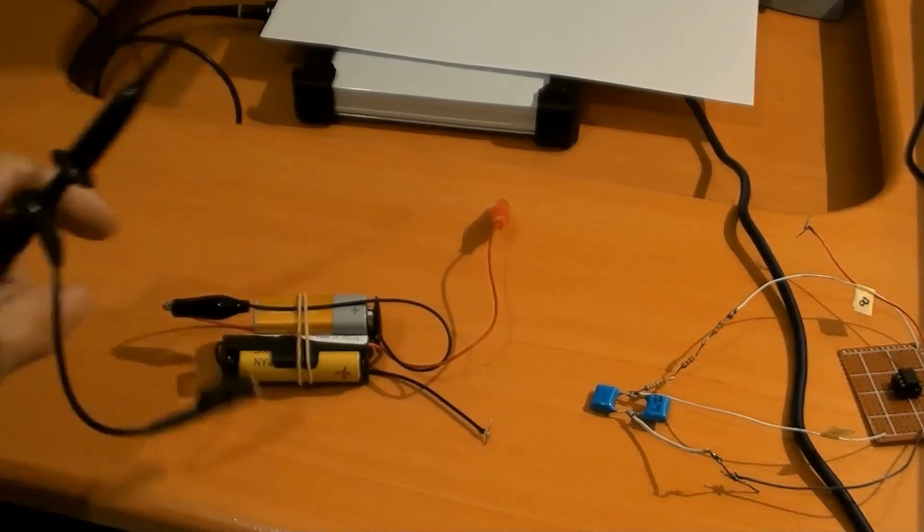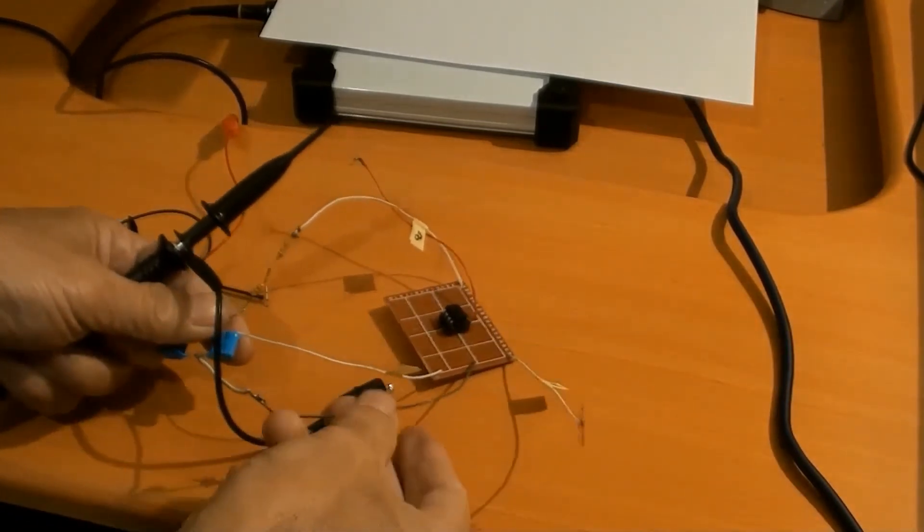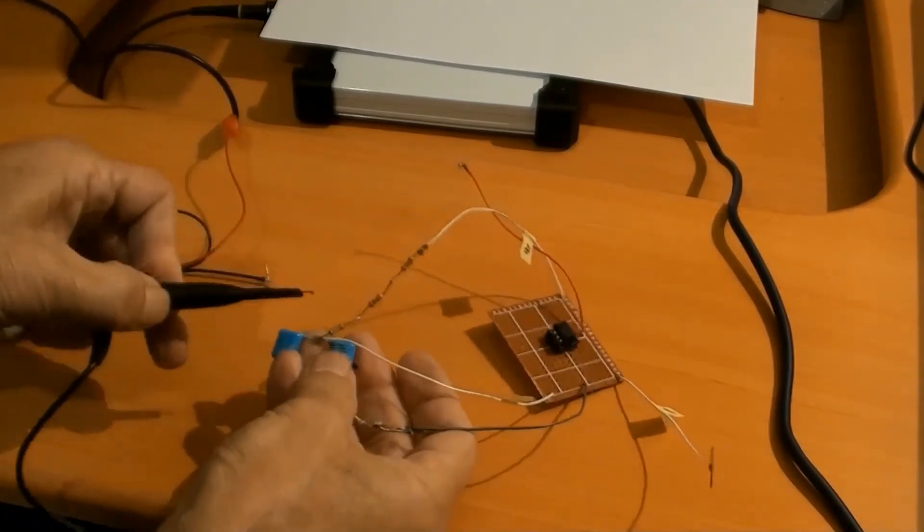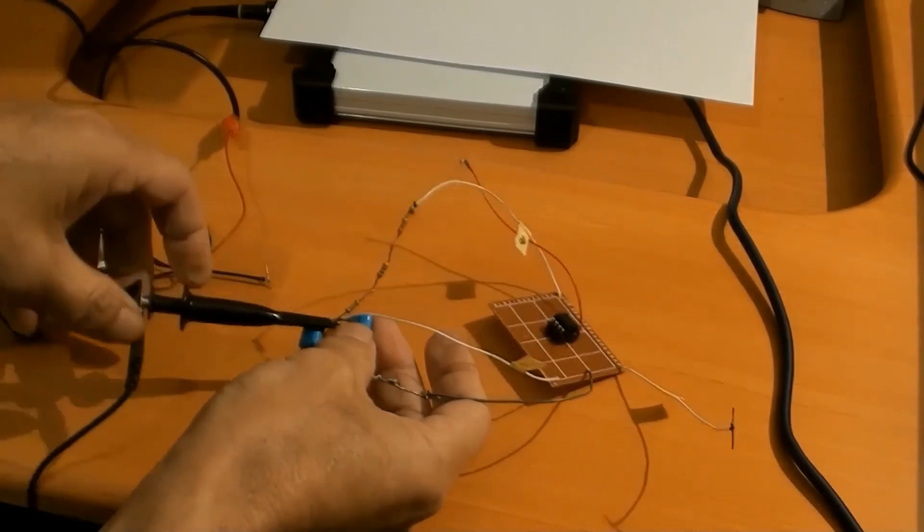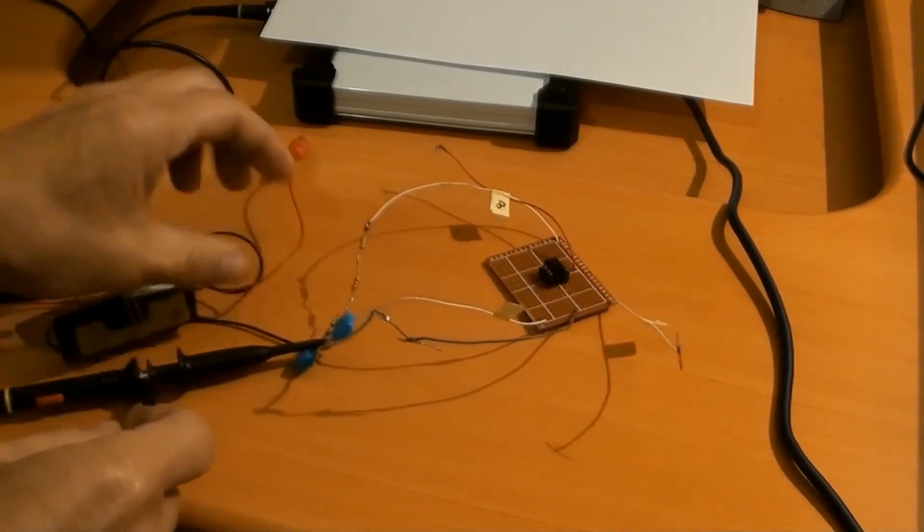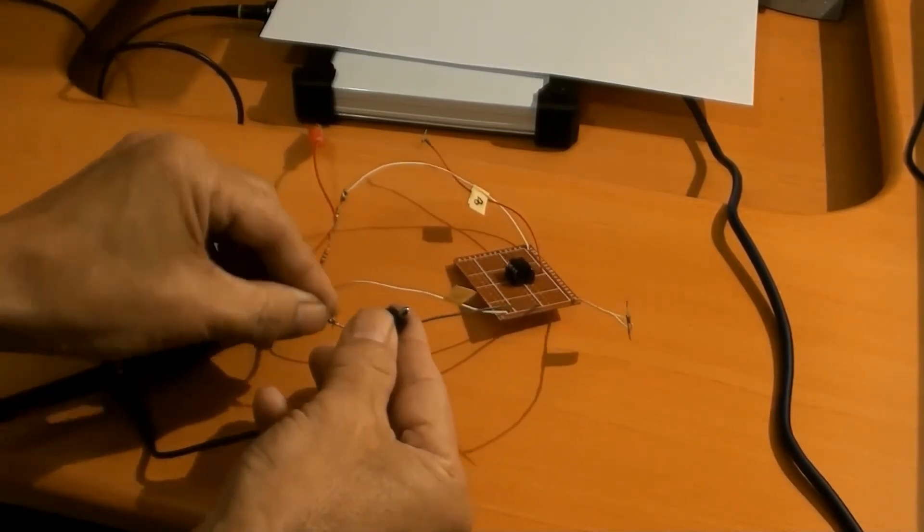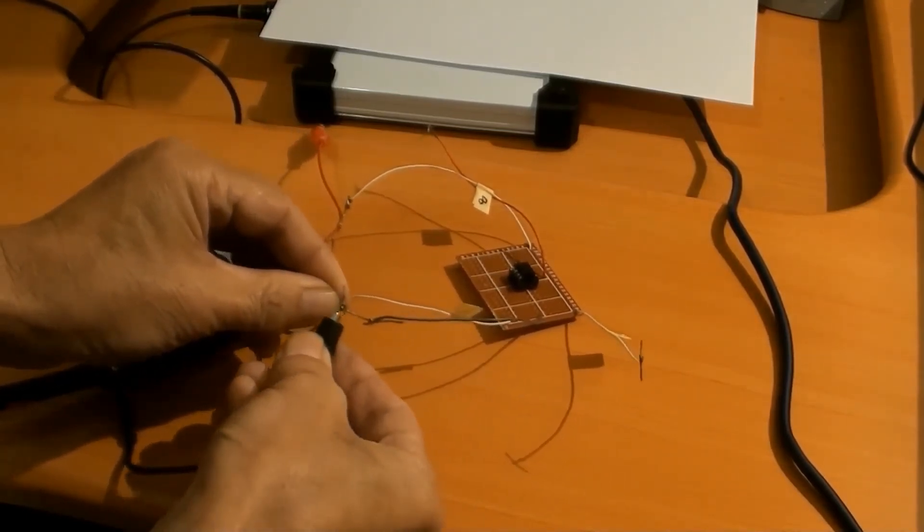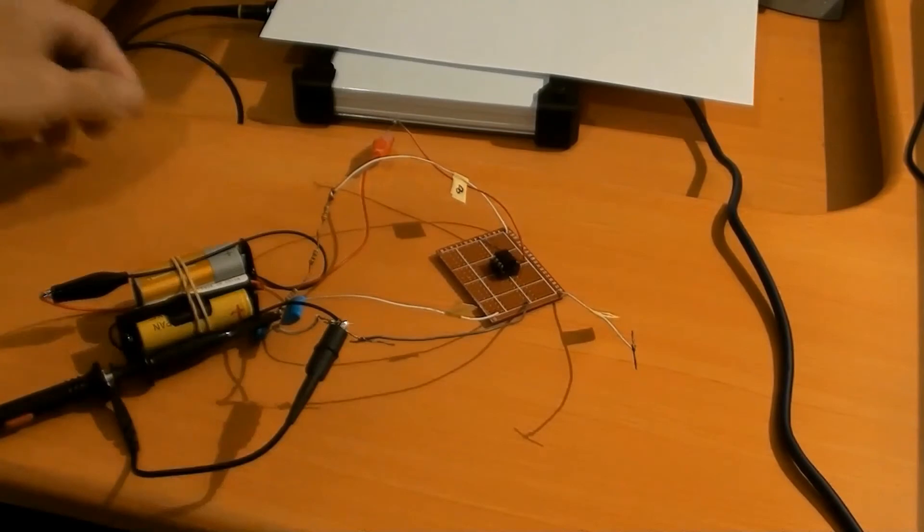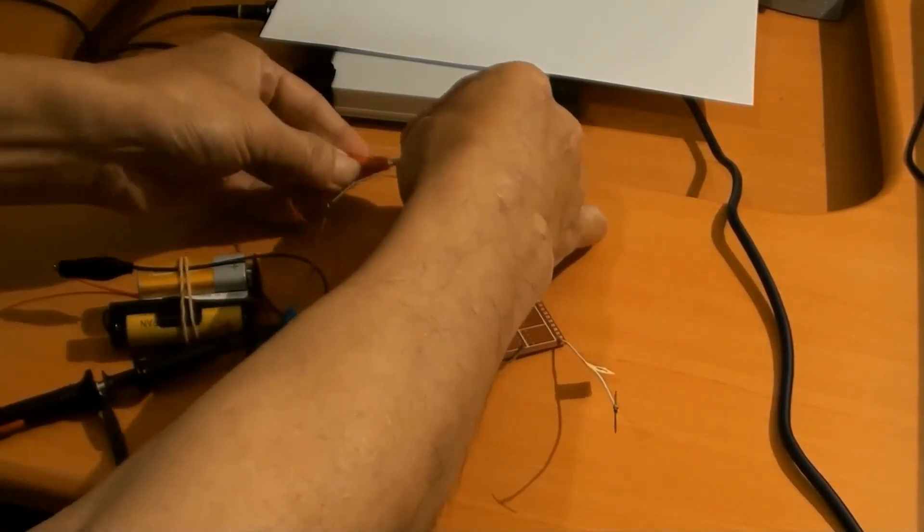Now doing necessary connecting. Scope's probe to number 4 of the oscillator's terminal. Scope's negative and batteries negative to number 5 of the oscillator's, which is ground. Battery positive to number 7 of the oscillator's terminal, which is VCC.